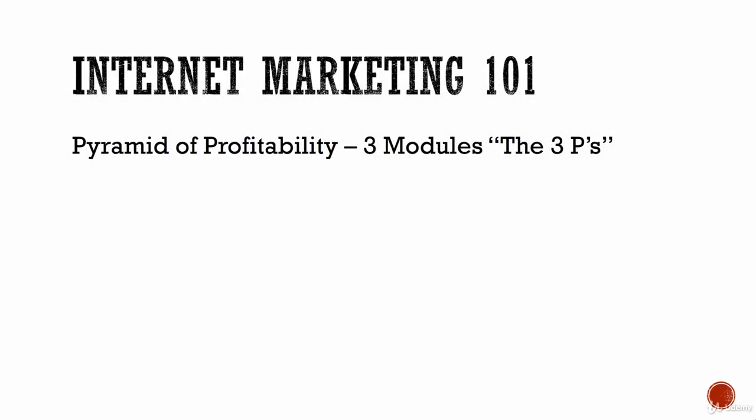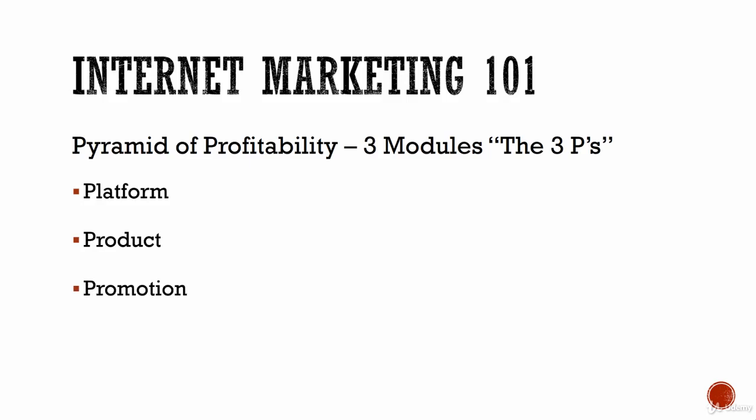I'm calling this course Internet Marketing 101: The Pyramid of Profitability. The Pyramid of Profitability is broken down into three modules — I call them the three P's. You need all three P's to build an online business. The first P is the platform, the second P is the product, and the third P is to promote that product.